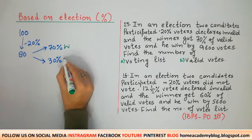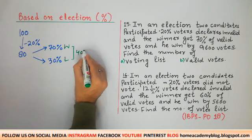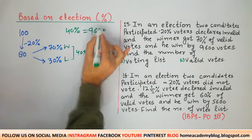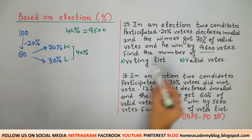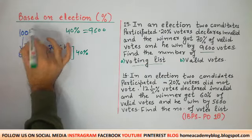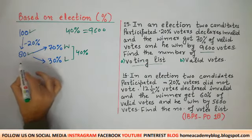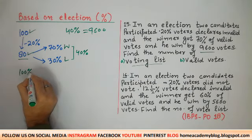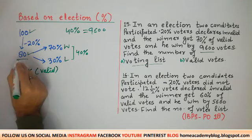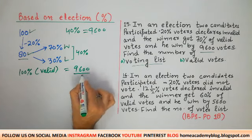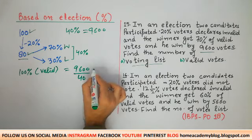So, winner has 70% and loser has 30% — difference is 40%. This 40% equals 9,600 votes. So 100% of valid votes = (9600 ÷ 40) × 100 = 24,000. Valid votes are 24,000. We also know valid votes represent 80% of polled votes (since 20% were invalid).